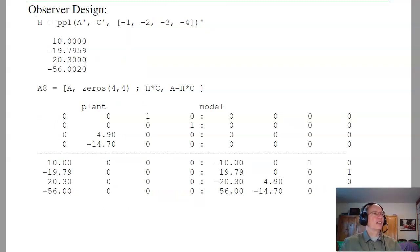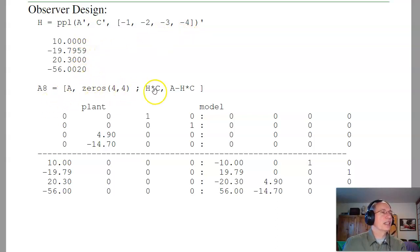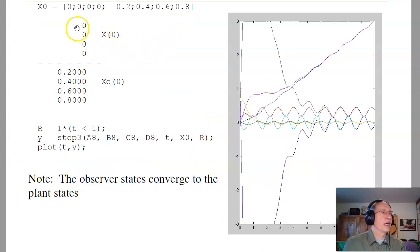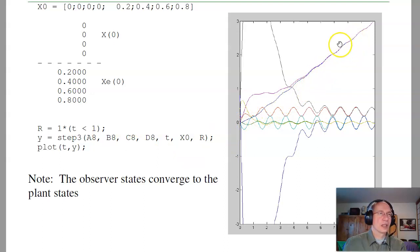So measuring position, I find the observer gain by placing poles at minus 1, minus 2, minus 3, minus 4. I get the observer gain and then the 8x8 augmented system with A, B, HC, and A minus HC blocks. Simulating in MATLAB with the plant initial condition at 0 and observer initial conditions at 0.2, 0.4, 0.6, 0.8, and a step input for one second: the cart starts drifting right, there's position, velocity, angle, and angle-dot swinging back and forth — and the observer states are converging to the actual states.